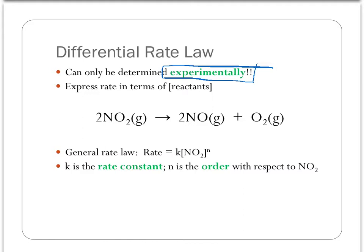Let's take a close look at an example: the decomposition of nitrogen dioxide to form nitrogen monoxide and oxygen gas. We want to describe the rate of this reaction in terms of the reagent NO2. Why do we limit ourselves to reagents? Think about this from an experimentalist standpoint — the only things you and I can control are the amount of reagent we start with (the concentration) and the temperature. So if I'm to express how fast a reaction can go, I only want to express it in terms of those things I can control. Whenever you derive a differential rate law, the first thing you do is write down the general rate law.